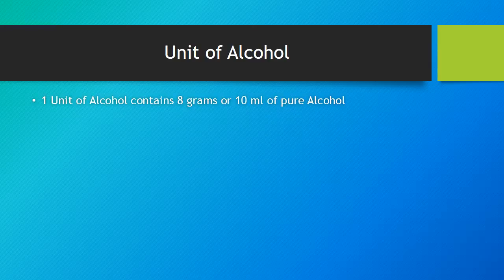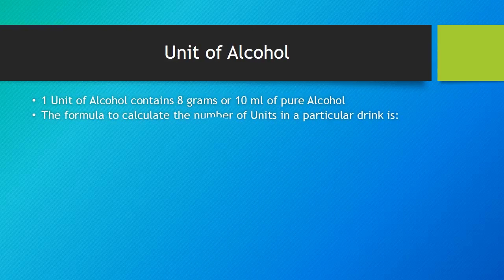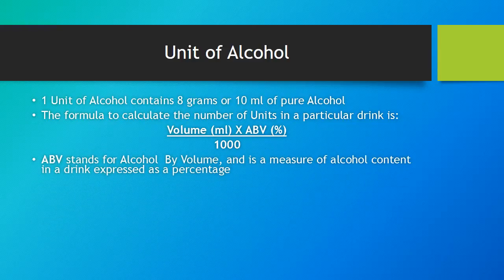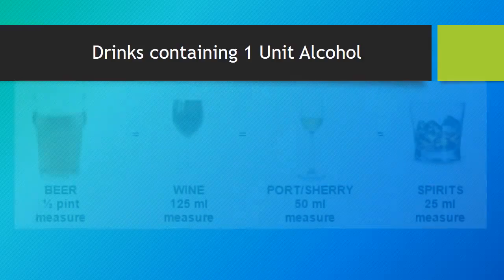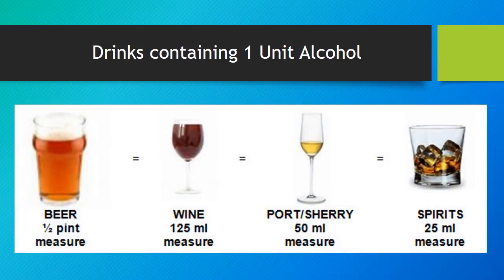One unit of alcohol contains 8 grams or 10 ml of pure alcohol. The formula to calculate the number of units in a particular drink is: volume in ml multiplied by ABV in percentage, divided by 1000, where ABV stands for alcohol by volume and is a measure of alcohol content expressed as a percentage. For example, the number of units in 500 ml of beer with 4% ABV will be 500 into 4 divided by 1000, which gives us 2 units. These are some of the drinks that contain 1 unit of alcohol.